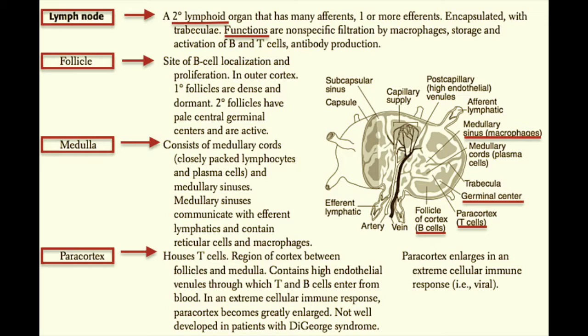Moving further towards the center of the lymph node, we see the medulla. This consists of medullary cords, which are closely packed lymphocytes and plasma cells — antibody-creating B cells. We also see medullary sinuses within the medulla. These sinuses communicate with the efferent lymphatics and contain reticular cells and macrophages as well.